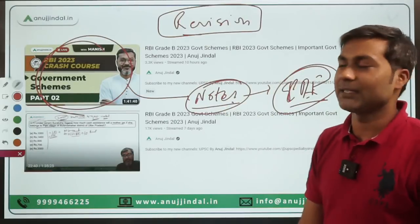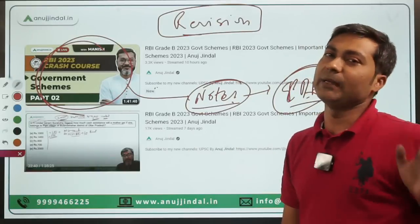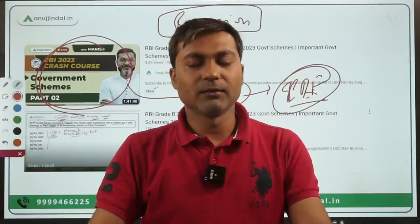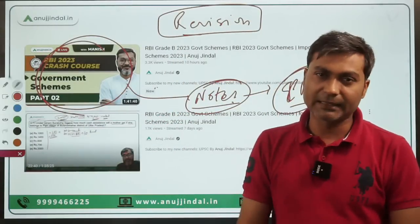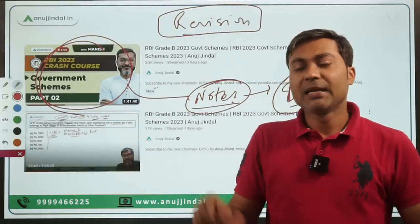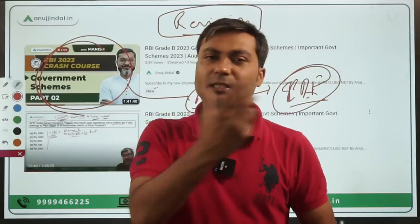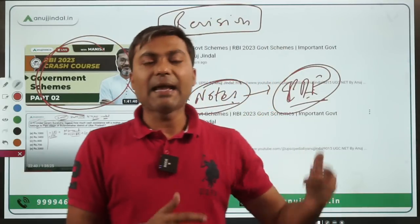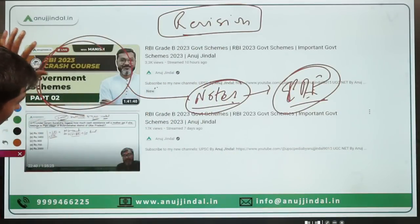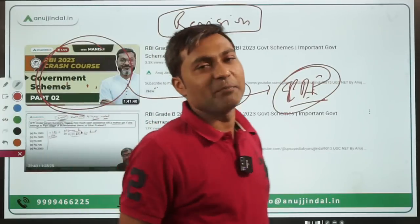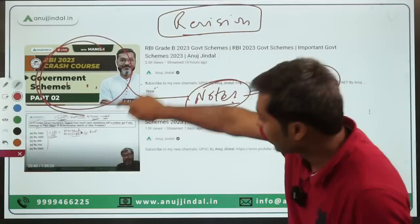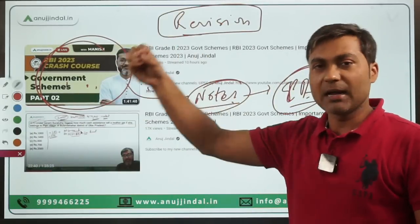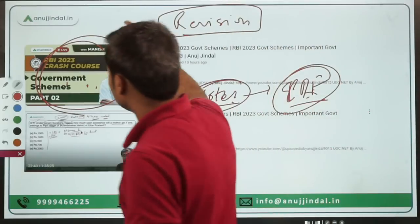If you are following any monthly magazine or any XYZ channel, there is a problem: in UPSC they don't ask questions in as much depth with respect to government schemes, but in RBI they do. More comprehensive coverage is required for RBI as compared to UPSC. So you can rely on these revision sessions. Along with that, PIB 247 sessions are there for schemes in news.